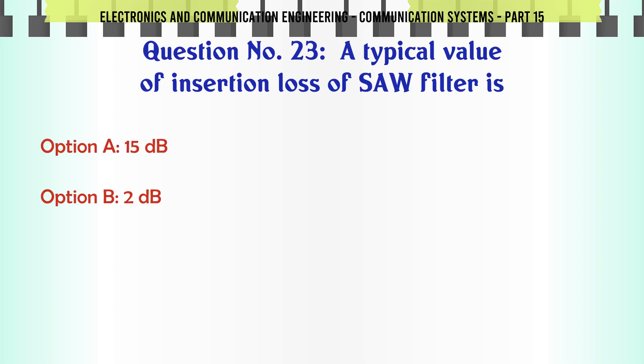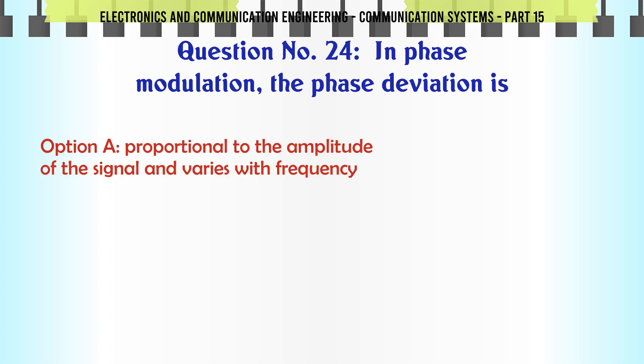A typical value of insertion loss of SAW filter is: A 15 dB, B 2 dB, C 40 dB, D 60 dB. The correct answer is 15 dB.